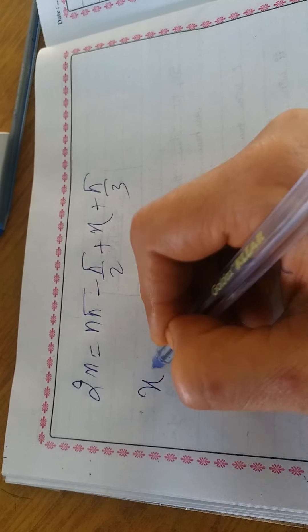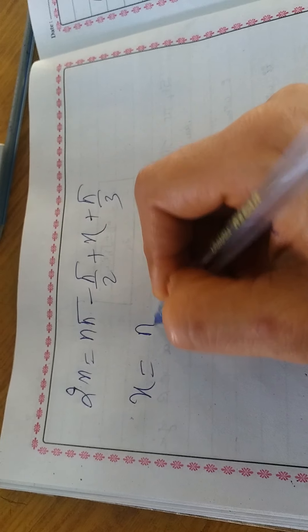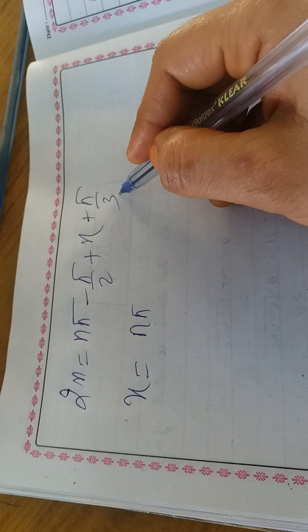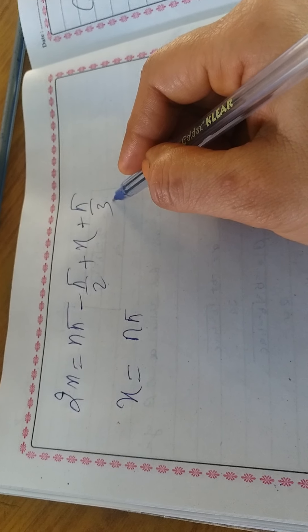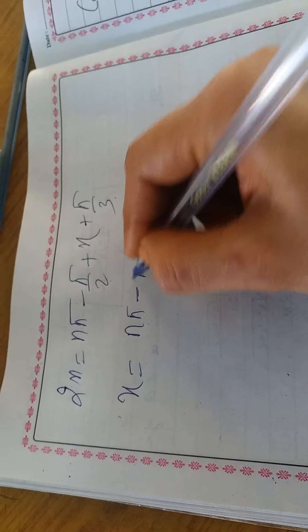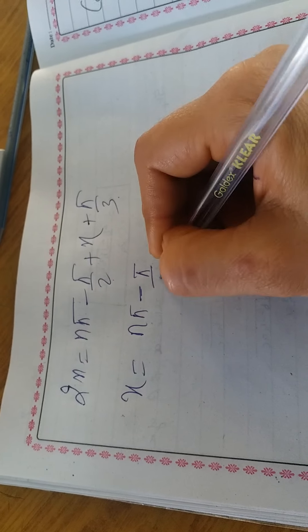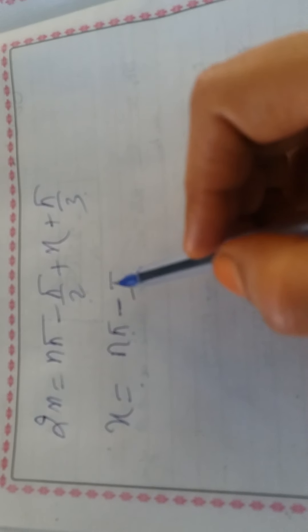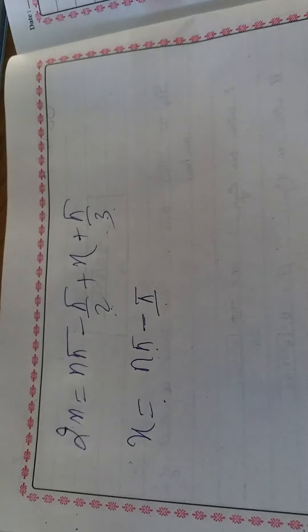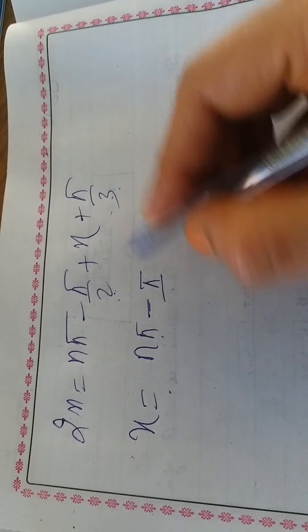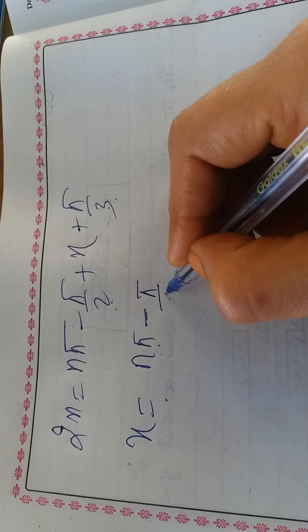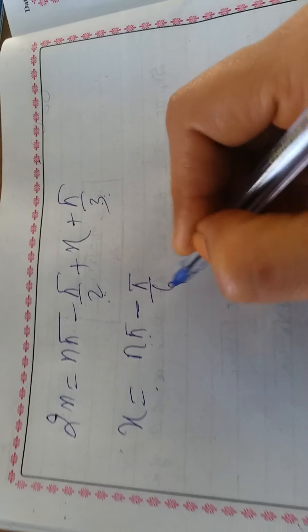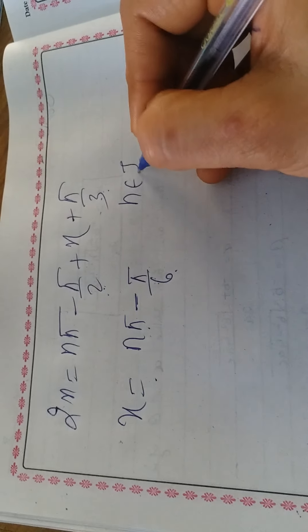Shifting x to the left: x = nπ - π/2 + π/3 = nπ - (90° - 60°) = nπ - 30° = nπ - π/6. So x = nπ - π/6, n ∈ ℤ.